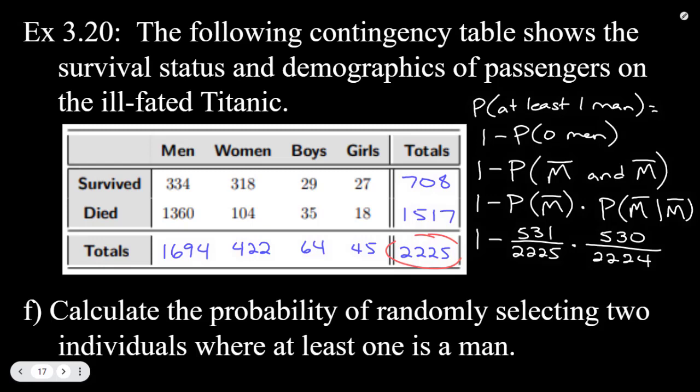So, let's go ahead and put this in, 1 minus 531 over 2225 times 530 divided by 2224. And we're going to get the probability of choosing at least one man is 0.943 if we round that off.